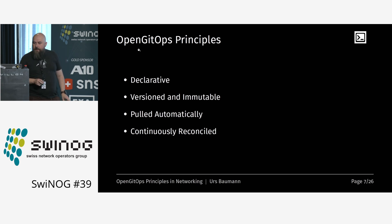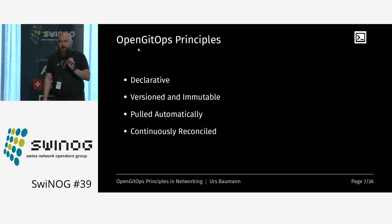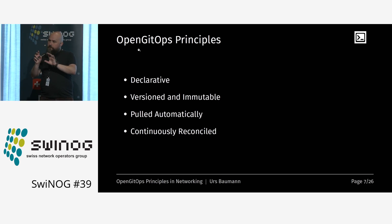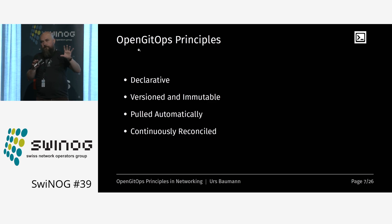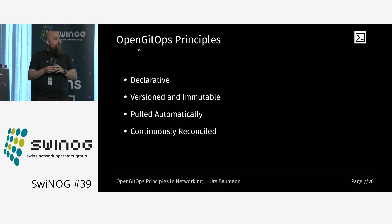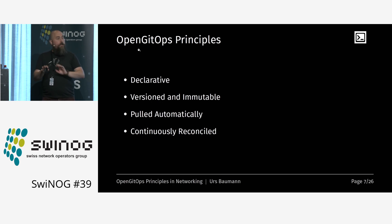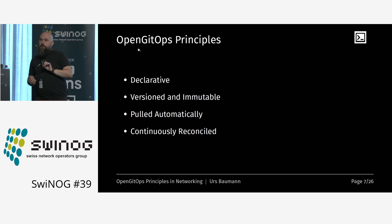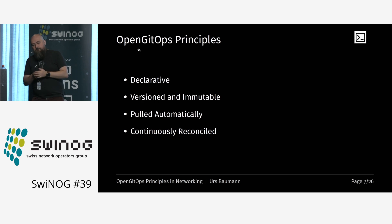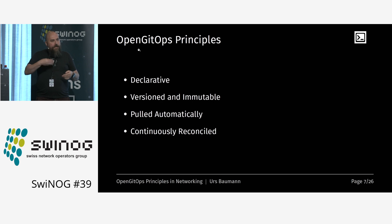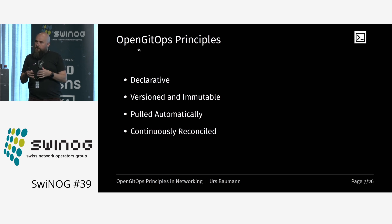One key part is that changes are pulled automatically. We need a GitOps agent that pulls changes from Git or another tool and applies them. With CI/CD, it would not be pulled — it's triggered by an action we do in Git. If we push something or create a merge request, there is a trigger from Git. GitOps does not use this trigger. It pulls automatically — maybe every five minutes, maybe less frequently, but it has to be regular.